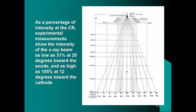This diagram shows the percentage of intensity at the central ray through experimental measurement. The x-ray beam intensity is as low as 31% at 20 degrees toward the anode end and as high as 105% at 12 degrees toward the cathode end, with 100% measured from the central ray. At the angle matching the anode bevel — 0 degrees — intensity is 31%. At 32 degrees toward the cathode, intensity reaches 105%, meaning the beam is actually stronger than the center toward the cathode end, and weaker toward the anode end.